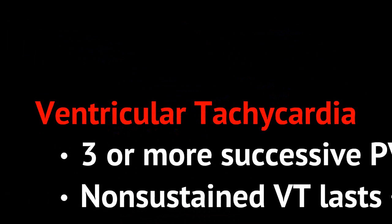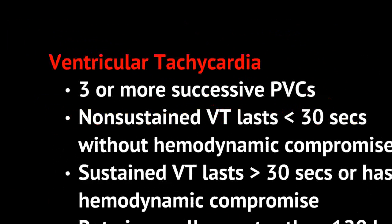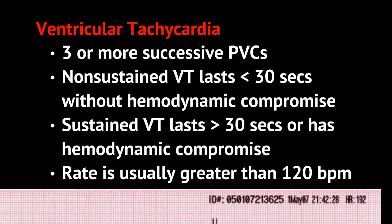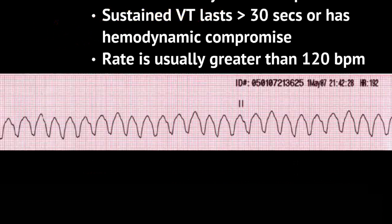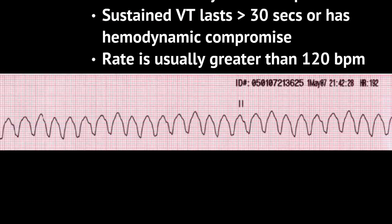PVCs can develop into ventricular tachycardia. When you have three or more successive PVCs, this is called ventricular tachycardia. VT can be characterized as non-sustained or sustained. Non-sustained VT lasts less than 30 seconds and is not associated with hemodynamic compromise or hypotension. Sustained VT lasts greater than 30 seconds and is often associated with hemodynamic compromise or hypotension. The rate of VT is usually greater than 120 beats per minute. On the strip below, VT looks like a wide complex rhythm that is generally regular and the complexes appear identical.